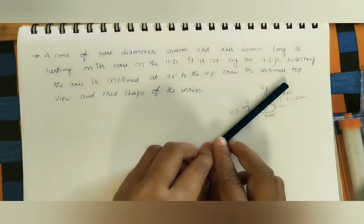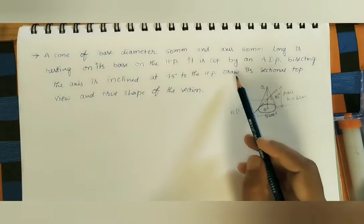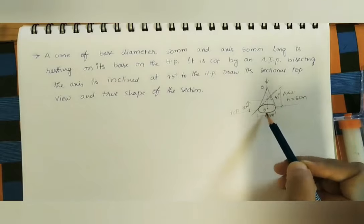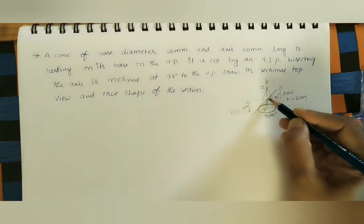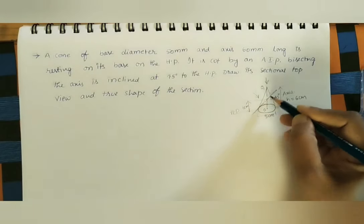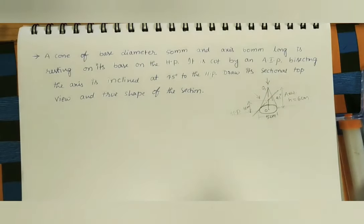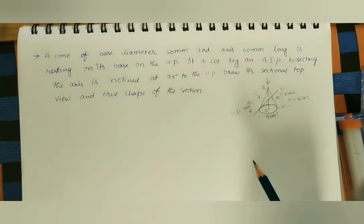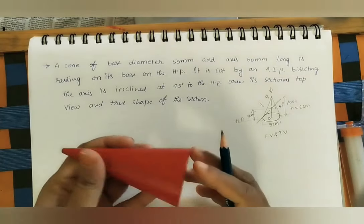We are taking the cutting plane in this direction, removing the top part and keeping the remaining part. For this remaining part, we have to draw its sectional top view — seeing from the top how this section looks — as well as the true shape of the section, seen perpendicular to the cutting plane. For doing this, we have to do the projections of the given cone: the top view and the front view.